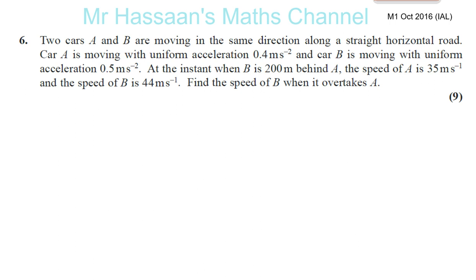Here we have October 2016 M1 IAL, Question number six. Two cars A and B are moving in the same direction along a straight horizontal road. Car A is moving with a uniform acceleration of 0.4 meters per second squared.